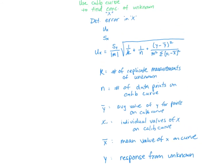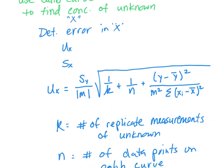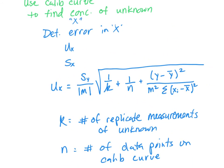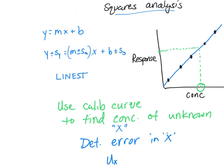So you use this equation to calculate the error in a concentration that you get from a calibration curve. Now some of you may think, why not just propagate the uncertainty? That doesn't give you the same result. In fact, it gives you an incorrect error.